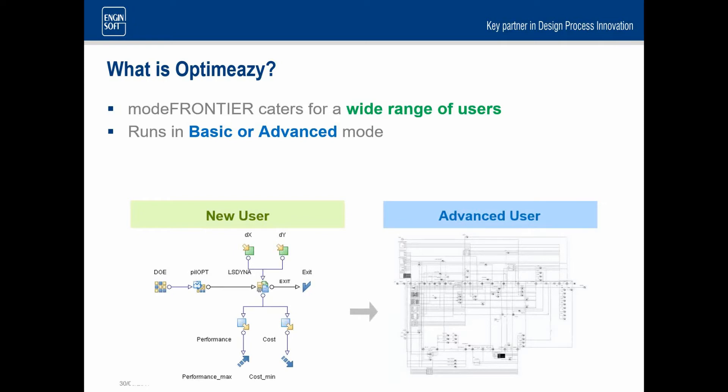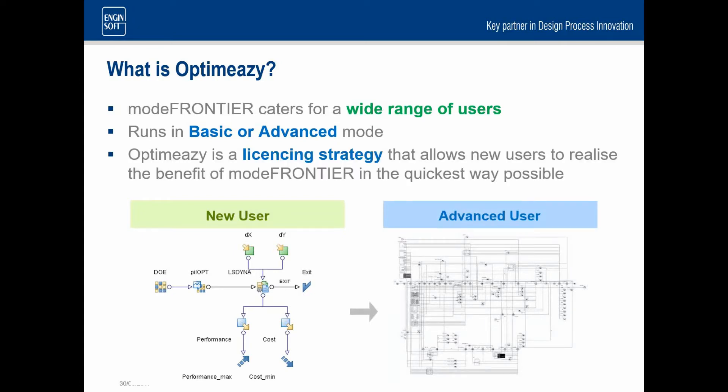A lot of the great powerful things that people have traditionally been able to do in modeFRONTIER have been made quick to use either less button presses or provide less options. And a lot of things are handled automatically in the background. And that really helps new users really extract the benefit of a huge, powerful tool like modeFRONTIER very quickly. A new user can do a small workflow like this with an OptimEazy license. But as part of that OptimEazy package, there's a licensing strategy that really gives you the best optimizer possible, the most robust one that is on offer with modeFRONTIER called PilOPT.